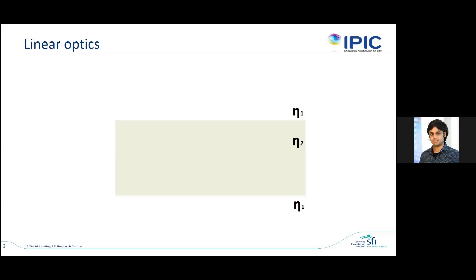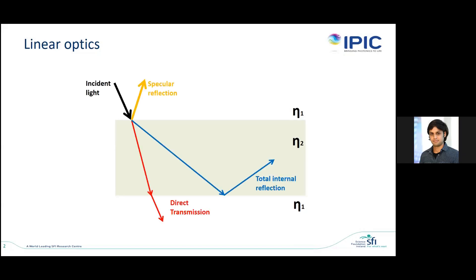To understand diffuse optics, it's better to start with understanding what linear optics means. In linear optics, you just shine light and there are three things that can happen: either there is specular reflection — the light is reflected at the same angle as the incident angle — or part of the light is transmitted through the medium. Depending on the refractive index difference between N2 and N1, total internal reflection can also occur. If N2 is much higher than N1, at a certain angle the light will start getting totally internally reflected. This is linear optics, and it is quite clean — we learn it in every optics course.